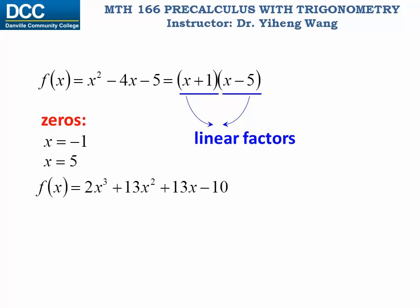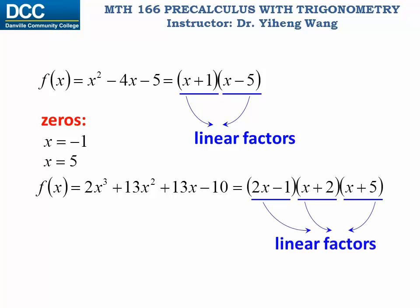What about this one? For this third degree polynomial function, although it's less obvious, if we can also rewrite it into a product of three linear factors, then we will be able to find the zeros to be one-half, negative two, and negative five. So since the polynomial function is the product of factors, if we know one or two factors, we should be able to use the reversed procedure — division — to find the remaining factors. And that's what long division and synthetic division is about.